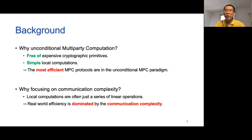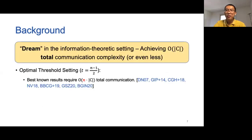Second, why do we focus on the communication complexity? Since the local computations are typically simple — often just a series of linear operations — the efficiency of a protocol in the real world is dominated by its communication complexity. The dream in the information-theoretic setting is to achieve O(C) total communication complexity or even less, where C is the circuit size. Note that it means that with the increase of the number of parties, the communication complexity per party decreases.